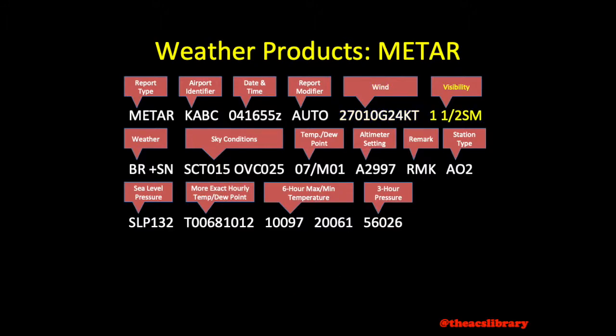Visibility, defined as the greatest horizontal distance at which objects can be identified, is reported in statute miles — in this case 1.5 statute miles.